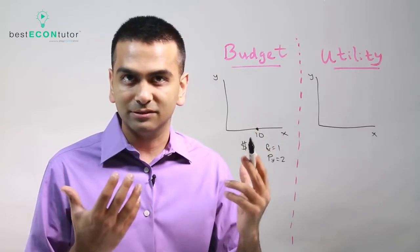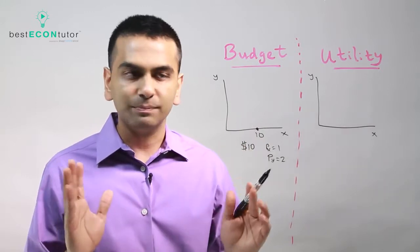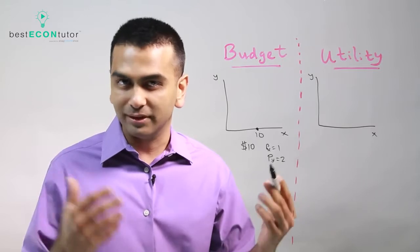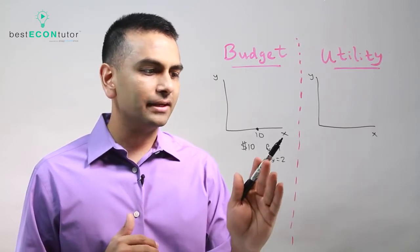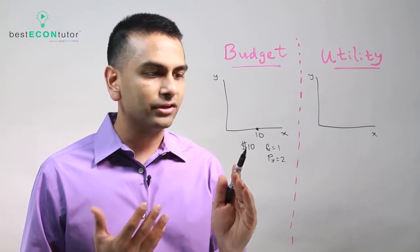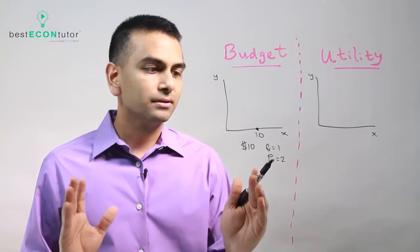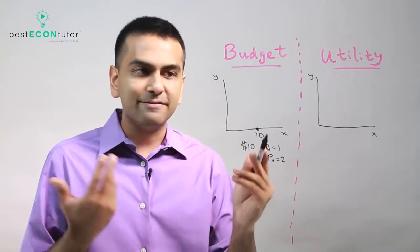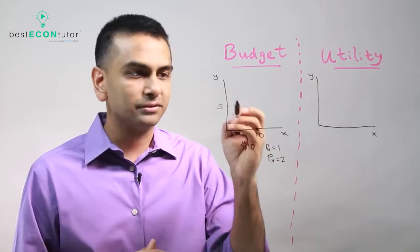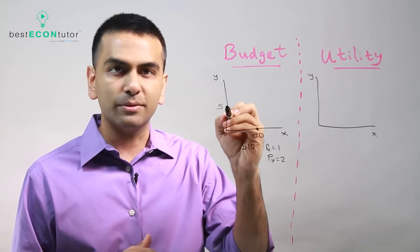What are all the bundles that they're able to consume? One big assumption here is that your income is only being spent between these two goods, so these are the only two goods in the world and you don't want to waste your income. Now, good Y costs two dollars, so out of your ten dollar budget, if you spent all of it on good Y at two dollars each, you could buy five items. That gives you zero units of X as another bundle.